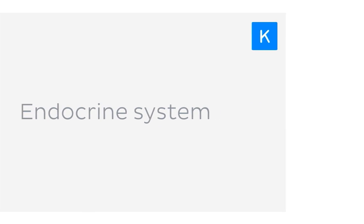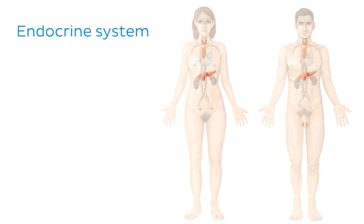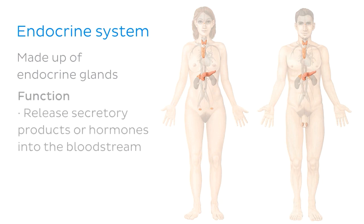The first thing we need to do is define the endocrine system. So what exactly is the endocrine system, and what does it do? Well, a system is a group of organs that work together in your body. And the endocrine system is a system of the body that's made up of endocrine glands. Basically, endocrine glands are glands that function to release their secretory products or hormones directly into the bloodstream, rather than via a duct, as is the case with exocrine glands.